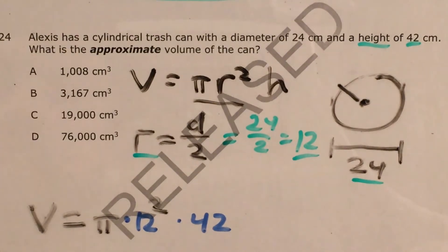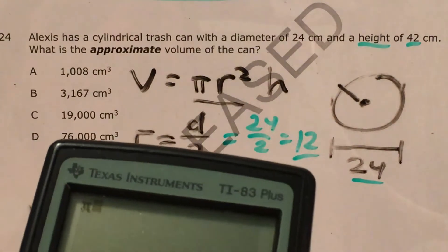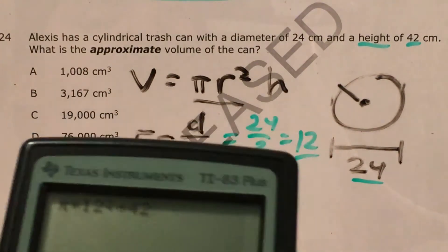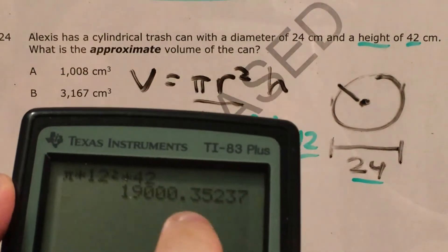And this is all something that I can just type into my calculator on one line. So that's pi times 12 squared times 42. So the hard part was getting to these numbers, but it gave us 19,000 and something.